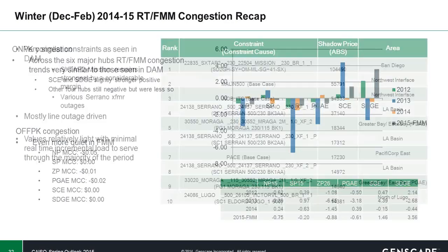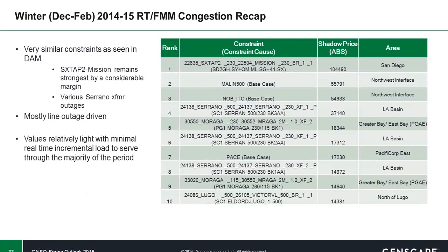Looking at the main real-time constraints, it's pretty surprising how much stronger the SXTAP2 Mission constraint is than really any other constraint. Serrano appears on this list three separate times because of the three separate transformers that were worked on — if you were to sum those values, it would actually move up to the second highest constraint. Outside of that, the primary drivers for constraints in real-time were line-outage driven, and the values were much weaker overall than what we saw in day-ahead.